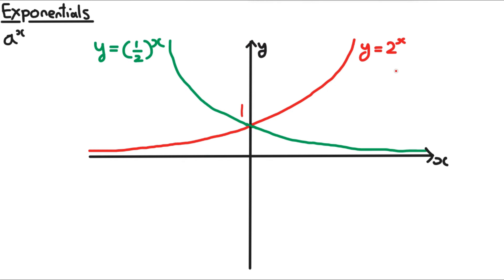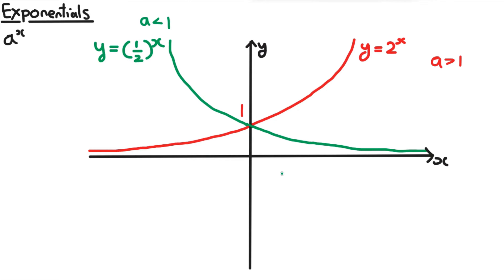There's a big difference in the graphs if a is greater than 1 or less than 1. In 2 to the power of x, a is greater than 1. But in a half to the power of x, a is less than 1. These graphs look very different because of the way powers work for fractions. When x gets bigger, the function actually decreases — a half squared is a quarter, and a half cubed is 1 over 8.